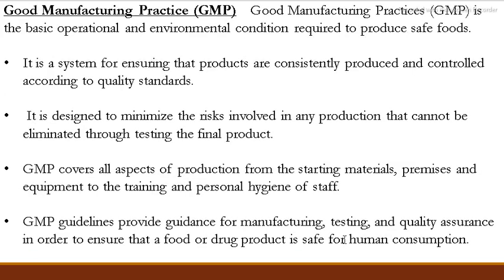Next is GMP — Good Manufacturing Practices. Good Manufacturing Practices refers to the basic operational and environmental conditions that we need to provide during food production. We use GMP to ensure that our product is consistently produced and meets quality standards. GMP covers every aspect of production and fits well to improve the production process and product quality.